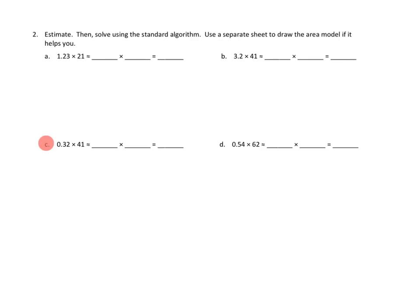Let's take a look at another problem. Problem number two. Directions are pretty similar. Estimate. Then solve using the standard algorithm. Use a separate sheet to draw the area model if it helps you. So it looks like we're going to go ahead and do this for problem 2C. Problem 2C says thirty-two hundredths times forty-one. And so we've got to estimate first. Well, our biggest place value here is the tenths place. So is this closer to three-tenths or four-tenths? Well, that's much closer to three-tenths. So I'm going to go ahead and write our estimate here of three-tenths. And then in our second number, our largest place value is the tenths place. Is this closer to four-tenths or five-tenths? It's much closer to four-tenths. It's just one away from four-tenths. And so that gives us our estimate.